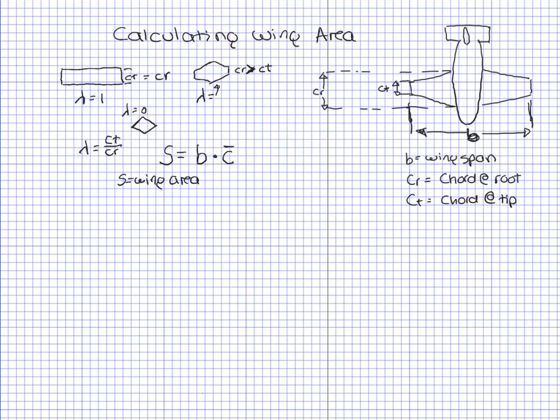The average chord: if the chord at the tip is the same as the chord at the root, as in the case of a rectangular wing, it's just wingspan times the chord. But if we have a tapered wing, we have to calculate the average chord.